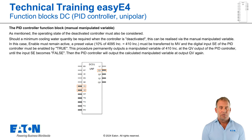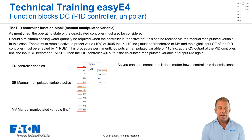For this task there is a solution: the manual manipulated variable of the PID controller. Should a minimum cooling water quantity be required when the controller is deactivated, this can be realized via the manual manipulated variable. In this case, the input enable must remain enabled. A value specification in increments must be transferred to the input MV, and the digital input SE of the PID controller must be enabled. The 10% target is calculated as follows: 4,095 maximum increments times factor 0.1 for 10% equals 410 increments. This procedure permanently outputs a manipulated variable of 410 increments at the QV output until the input SE becomes false.